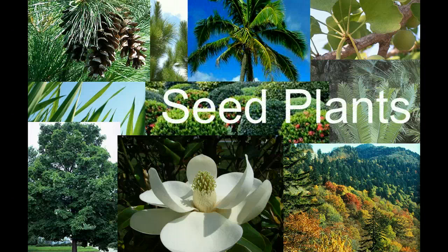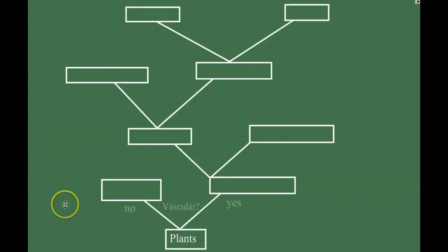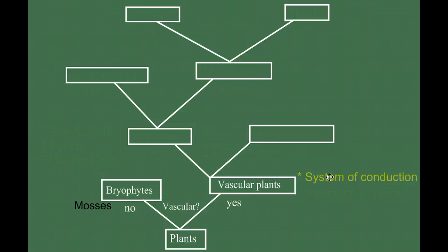How did we get to this point in our discussion on plants? We began by organizing plants based on common questions. The first question we asked was: does the plant have vascular tissue? If the answer was no, we talked about the bryophytes, using mosses as an example. If yes, we had vascular plants. We talked about the evolutionary advantage of vascular tissue — a system of conduction that allows plants to grow larger, moving materials efficiently throughout the plant body.